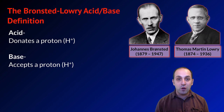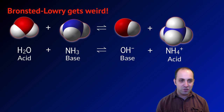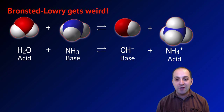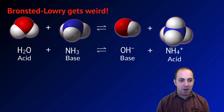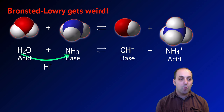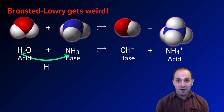Let's take a look at how this works. The Bronsted-Lowry definition is definitely a little bit weirder than the Arrhenius definition. Here we see a reaction between water and ammonia to produce a hydroxide ion and an ammonium ion. If we look at what's happening between water and ammonia, we can see that water is donating a proton to ammonia. As a result, it's acting as an acid.